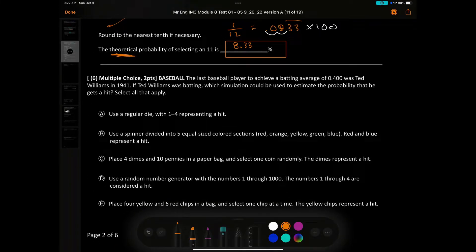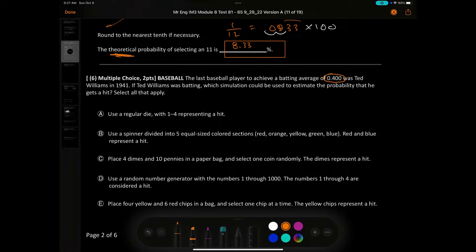Number 6. Baseball multiple choice. The last player to achieve a batting average of 400 was Ted Williams in 1941. If Ted Williams was batting, which simulation would be used to estimate the probability that he gets a hit? Select all that apply. Basically you want one that has an average or decimal of 0.40. Using a regular die - a regular die has 6, so 4 out of 6 is 2/3, which is 0.67. Those do not match, so not A. B. Use a spinner divided into 5 equal sections, and red and blue represent a hit. This would be 2 out of 5, which if you double it gives you 4 out of 10, which is 0.40, which would match. So B makes sense.